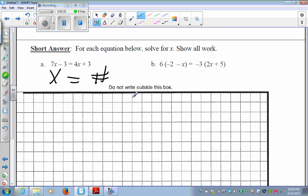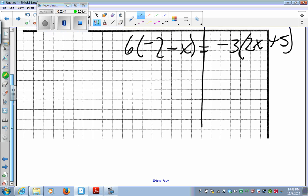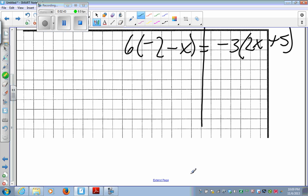Problem number 2 in this section, I'm going to rewrite right down here on the grid. 6 times negative 2 minus x is equal to negative 3 times 2x plus 5. I'm going to draw my little line right through the middle, just as a reminder that this is the middle of my equation. I've got to use distributive property first. I can't do negative 2 minus x, because they're not like terms.